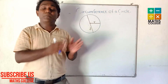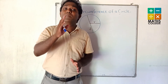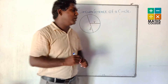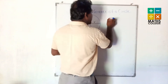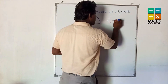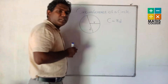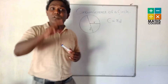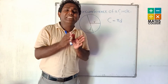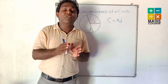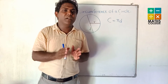We have a formula to find the circumference of the circle. What is the formula? C equals π times D. What is π? π is a constant. Constant means the value does not change — the value is fixed. Constant means not changing.